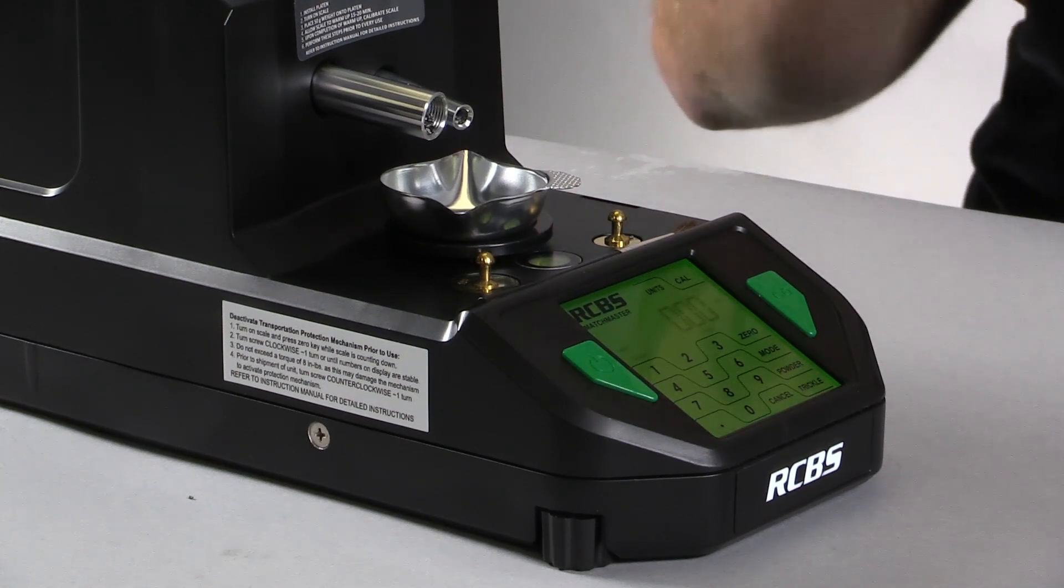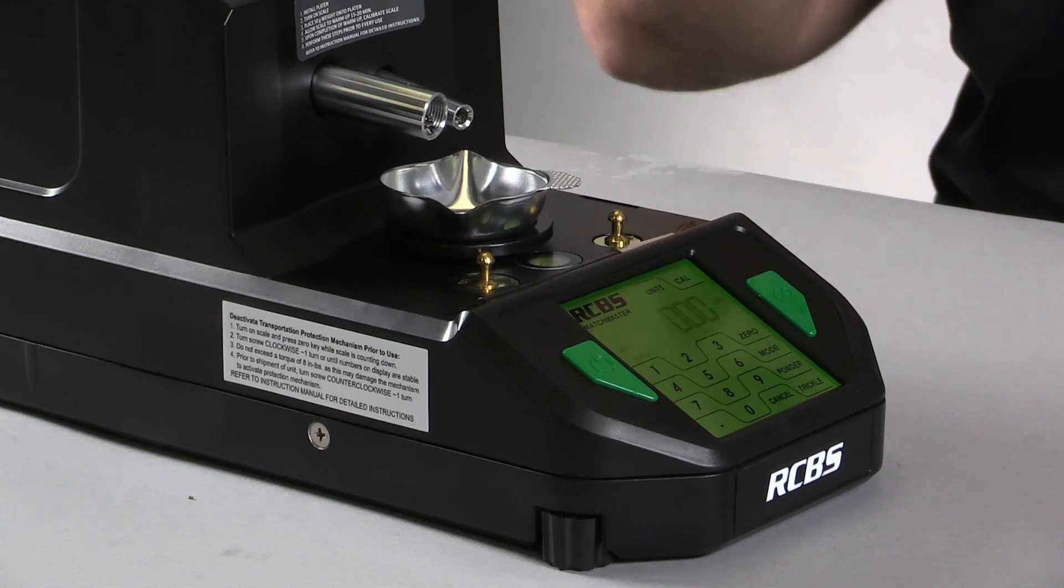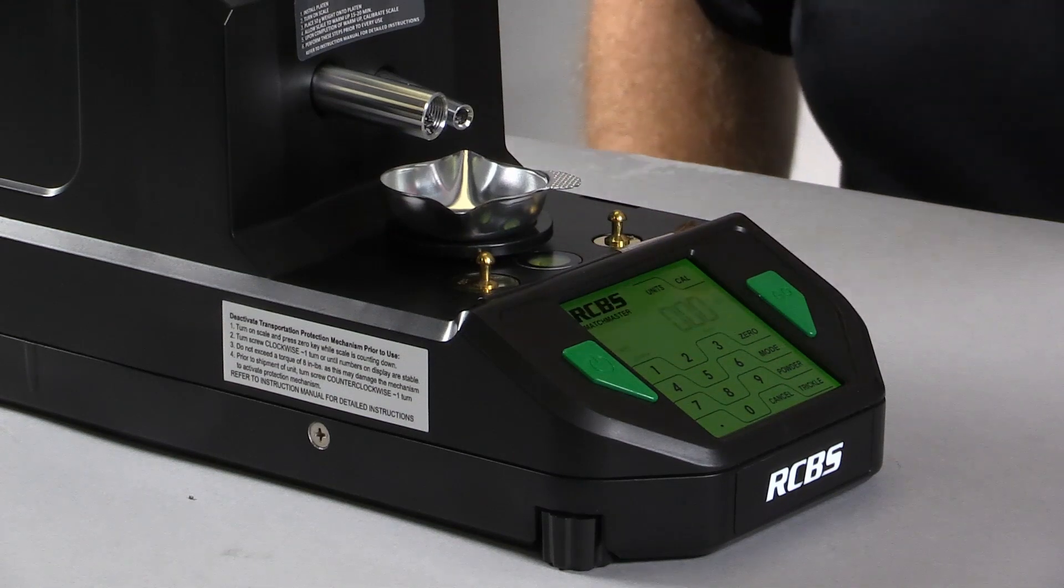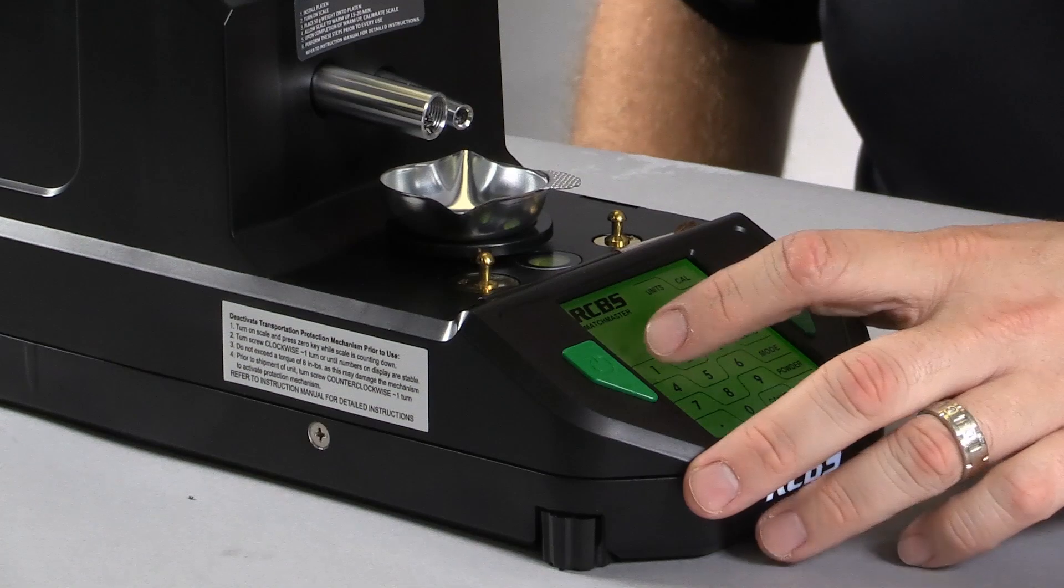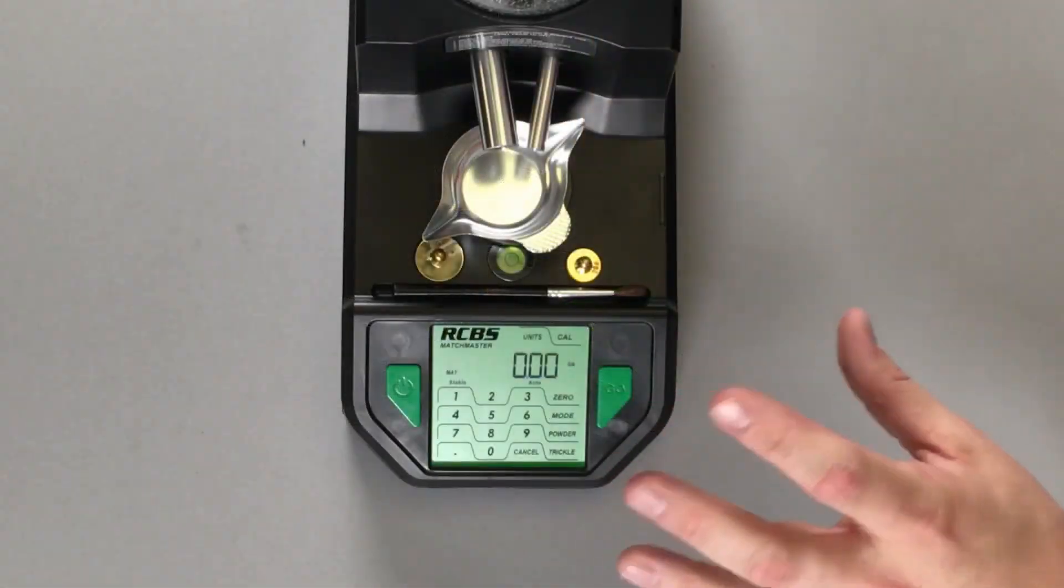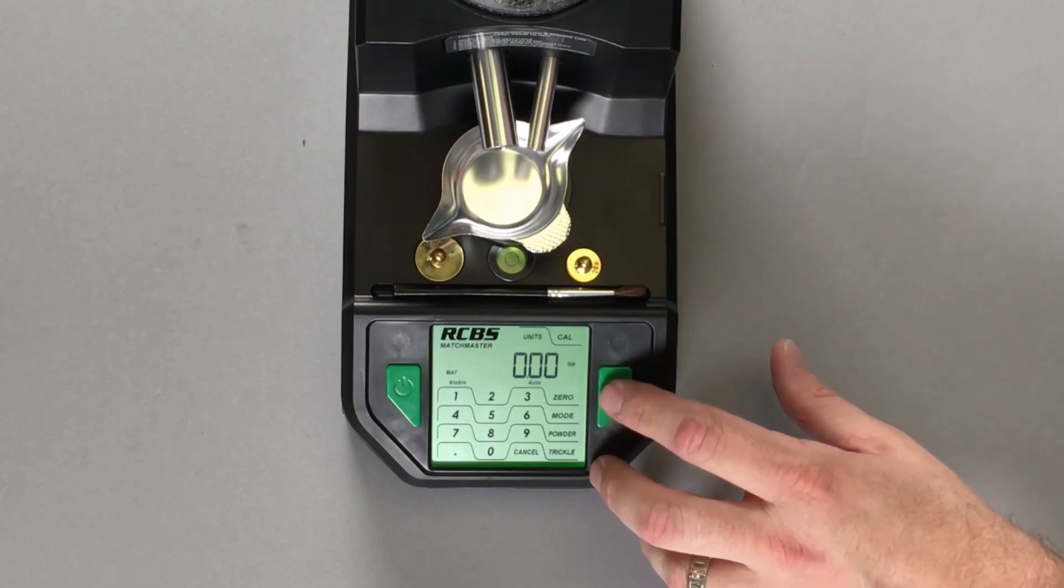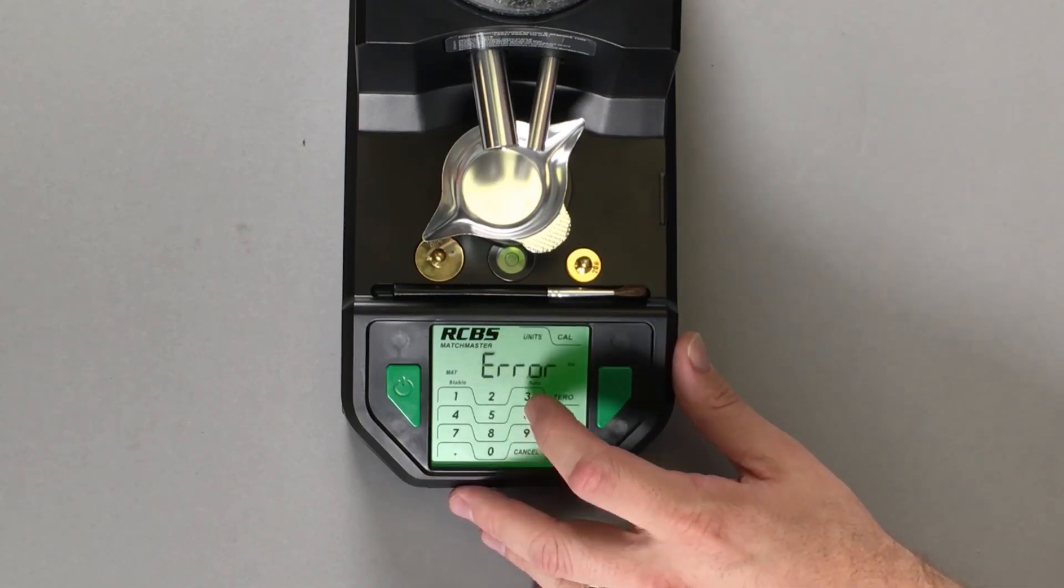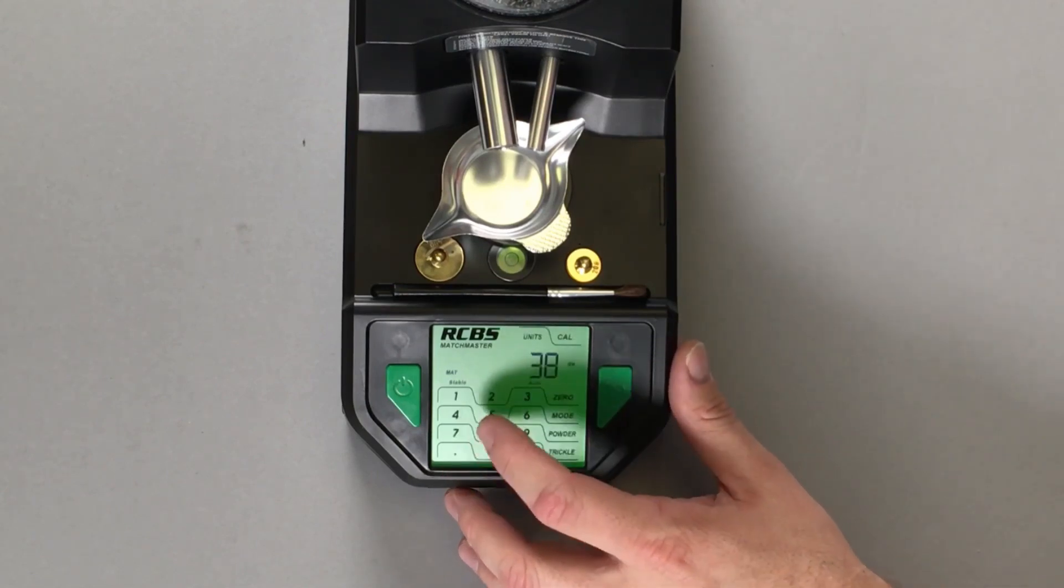Right now we're going to dispense a couple displays so you can understand what I'm talking about. I'm going to hit one powder. This will be the slowest speed that you see. So we'll hit go. First, I got to type in a powder charge. So we'll do 38 and a half grains.